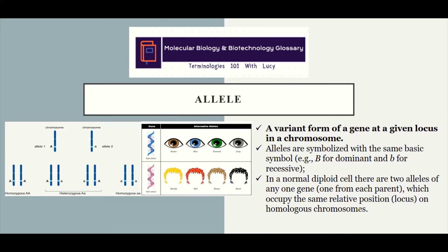What is an allele? An allele is a variant form of a gene at a given locus in a chromosome, or the alternative forms of a gene. Genes are the coding segments of DNA that code for particular traits. So we have variant forms or alternative forms of a gene.